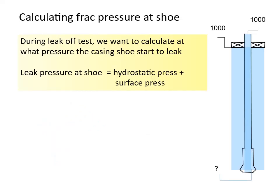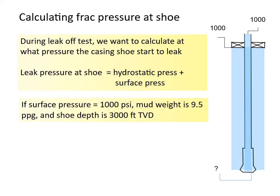During leak off test, we want to calculate leak pressure at casing shoe. Leak pressure at shoe equals hydrostatic pressure plus surface pressure. If surface pressure when the formation at shoe is starting to leak is 1000 psi, and mud weight is 9.5 ppg, and shoe depth is 3000 feet, then we can calculate the shoe leak pressure as follows.